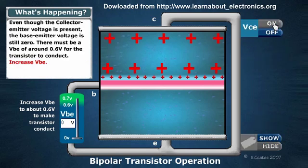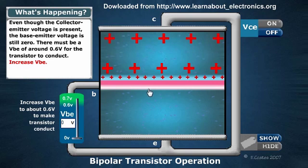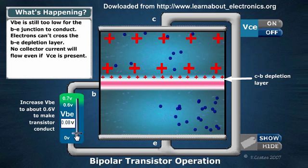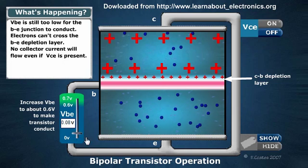Don't forget that this end is connected to the positive. To start with, even though there is a positive potential being applied to this point, no current can flow to the negative here because it cannot get across this depletion zone. So we start to increase the voltage — as soon as we have a small increase, there's still no flow across.